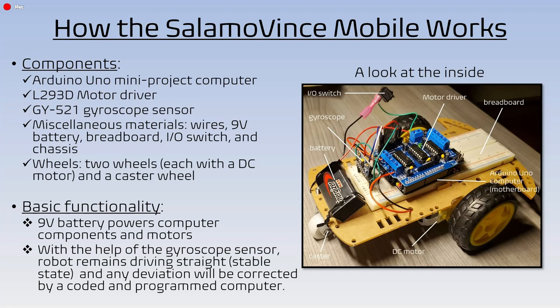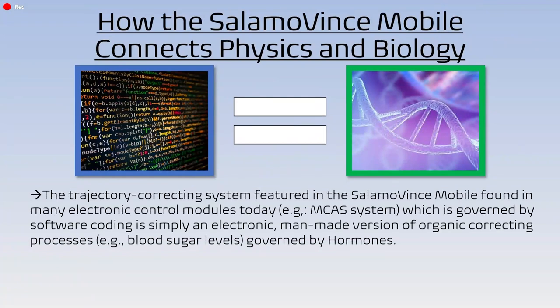The 9-volt battery powers the computer and all the components, and with the help of the gyroscope sensor the robot remains in a straight line as it moves forward. Any deviation will be corrected by the computer with the code. For example, if it is pushed to the right, it will communicate with the motors to return back to going straight forward.